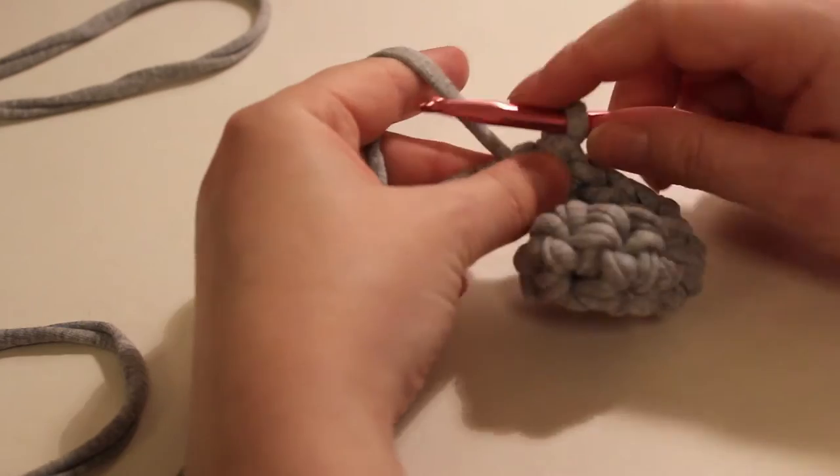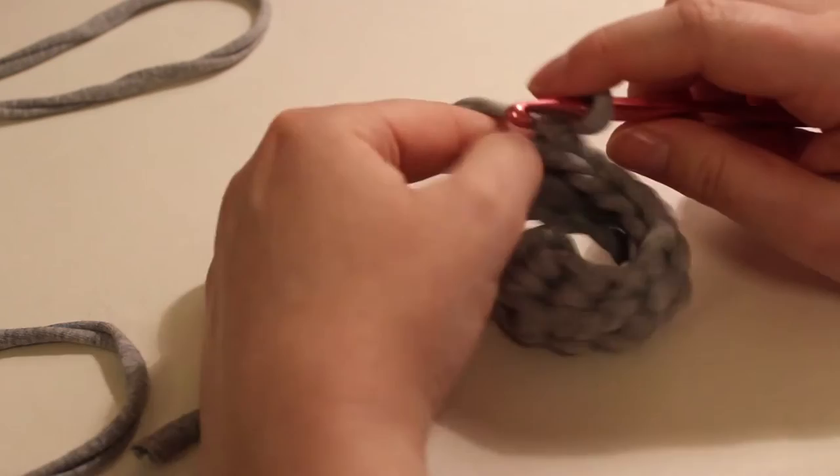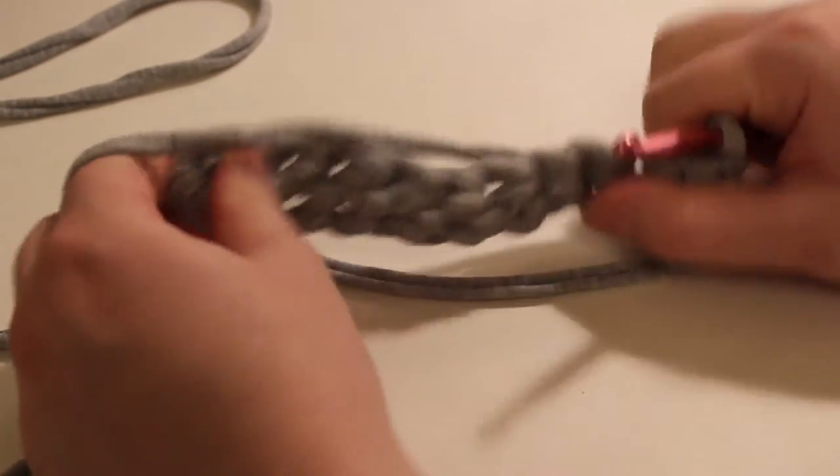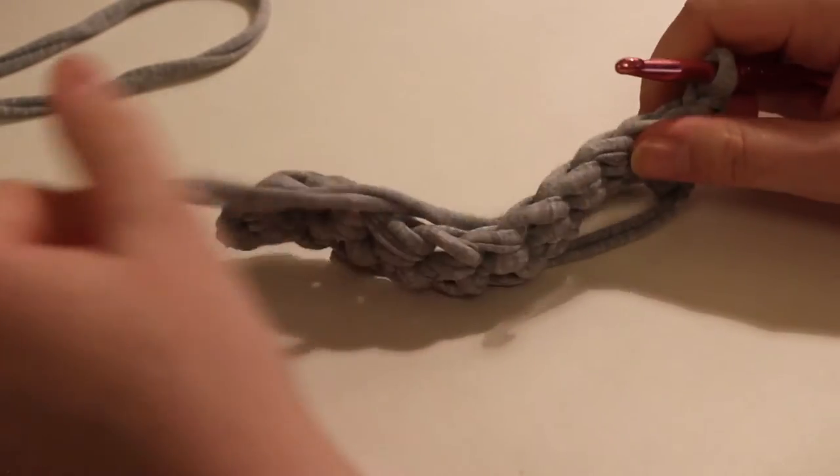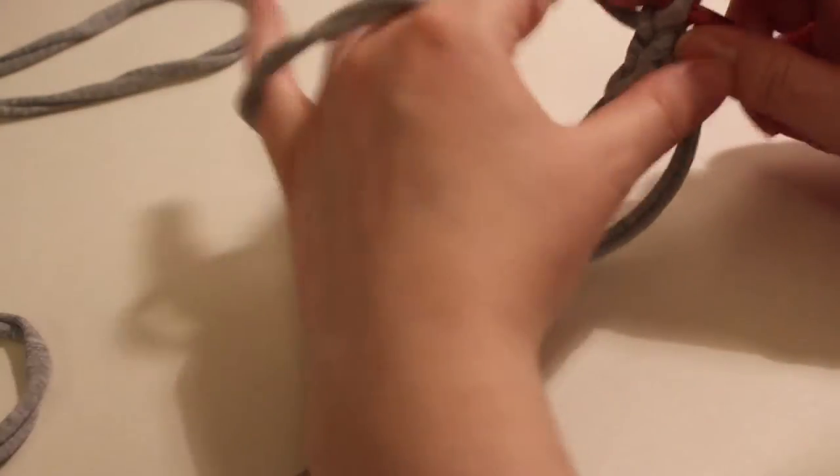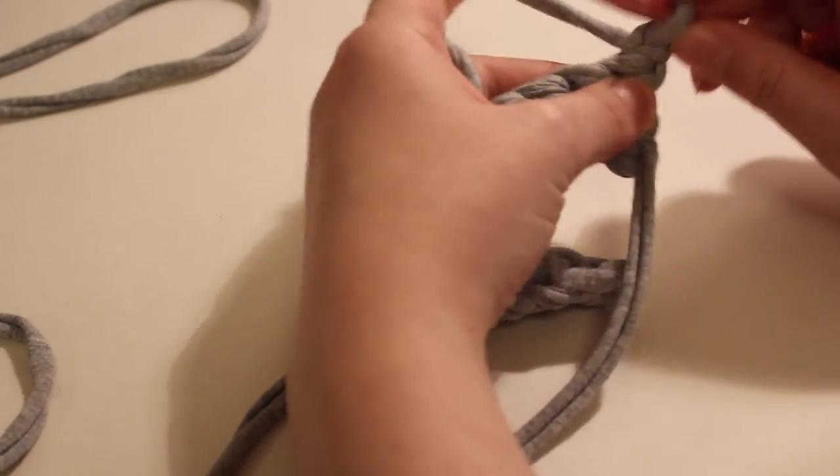Now, to turn, you're going to chain one—so just yarn over and go through the one loop on your hook—and then you're going to turn. And yours shouldn't be curling as much as mine is; I think that is because the yarn is super stretchy. Most cotton yarns that you would use for dishcloths are not this stretchy.